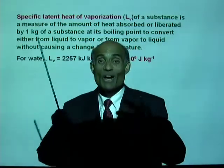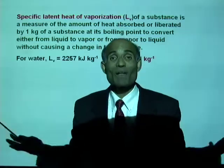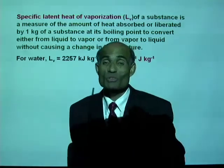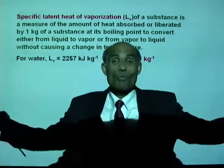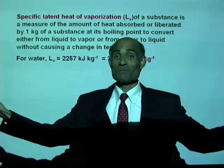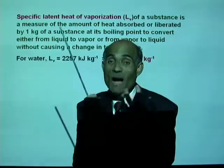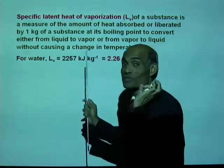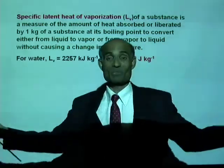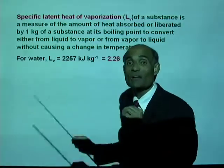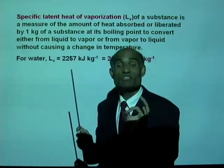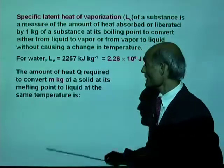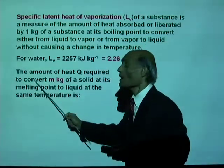This is the reason why Earth has such an abundant supply of water. Imagine if the latent heat of vaporization of water were very small — there would be no water left on the surface of the Earth. We owe our lives to this quantity, because if this were a small number we would not be able to live on the surface of the Earth. So we owe our lives to this very high latent heat of vaporization of water.